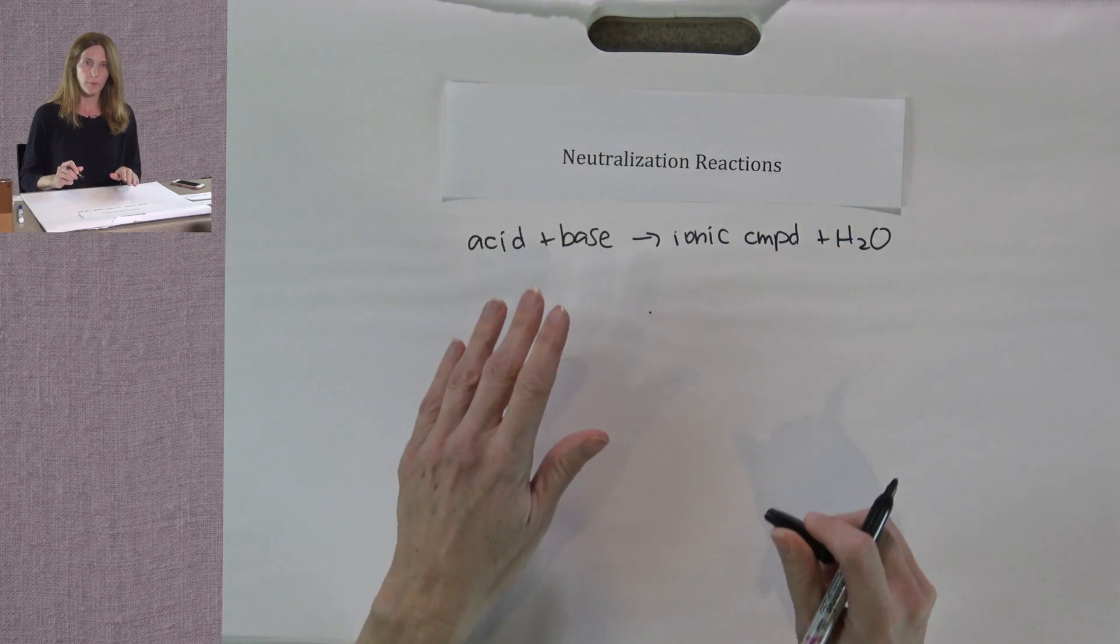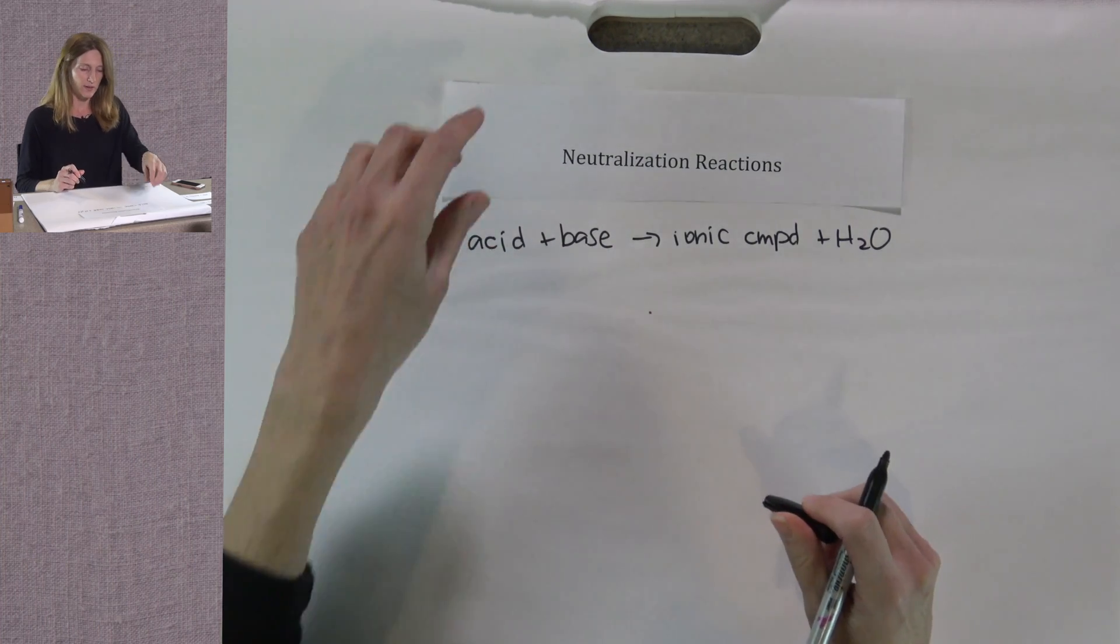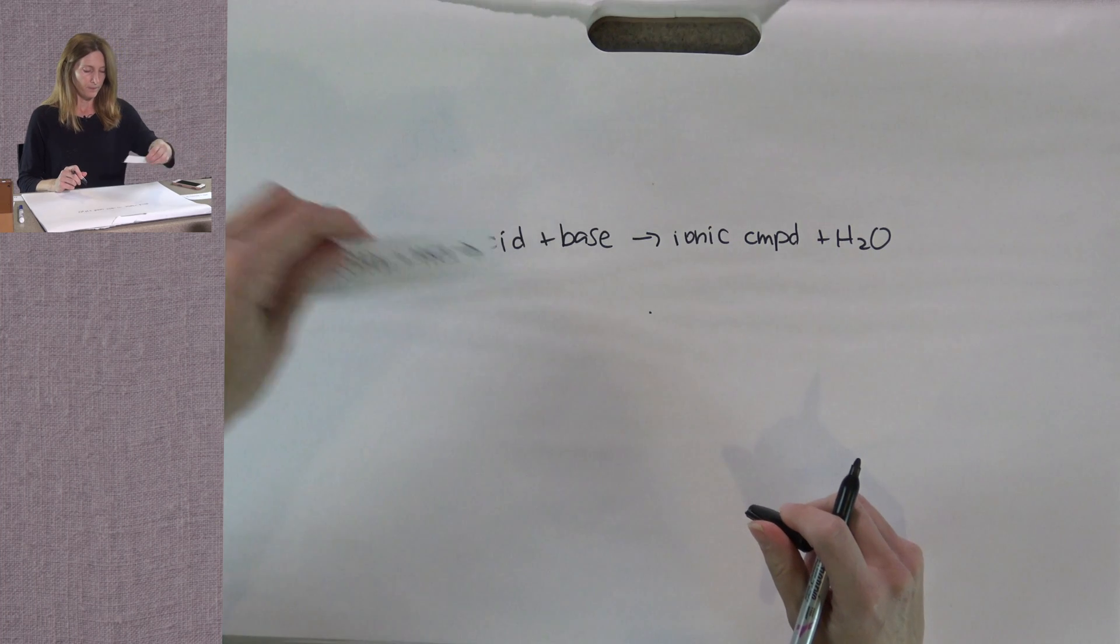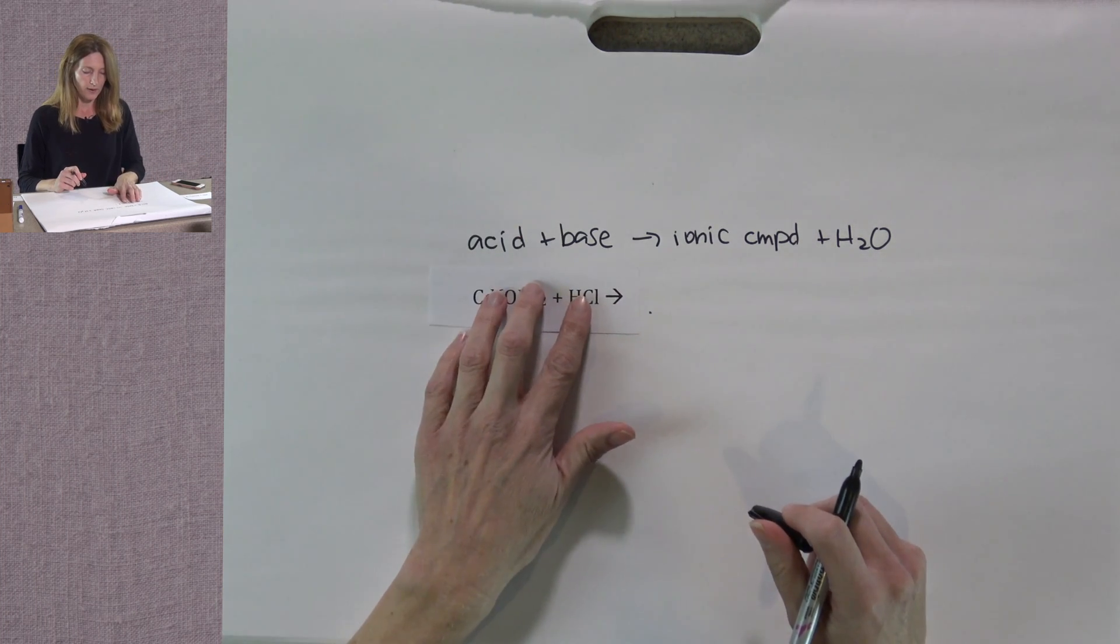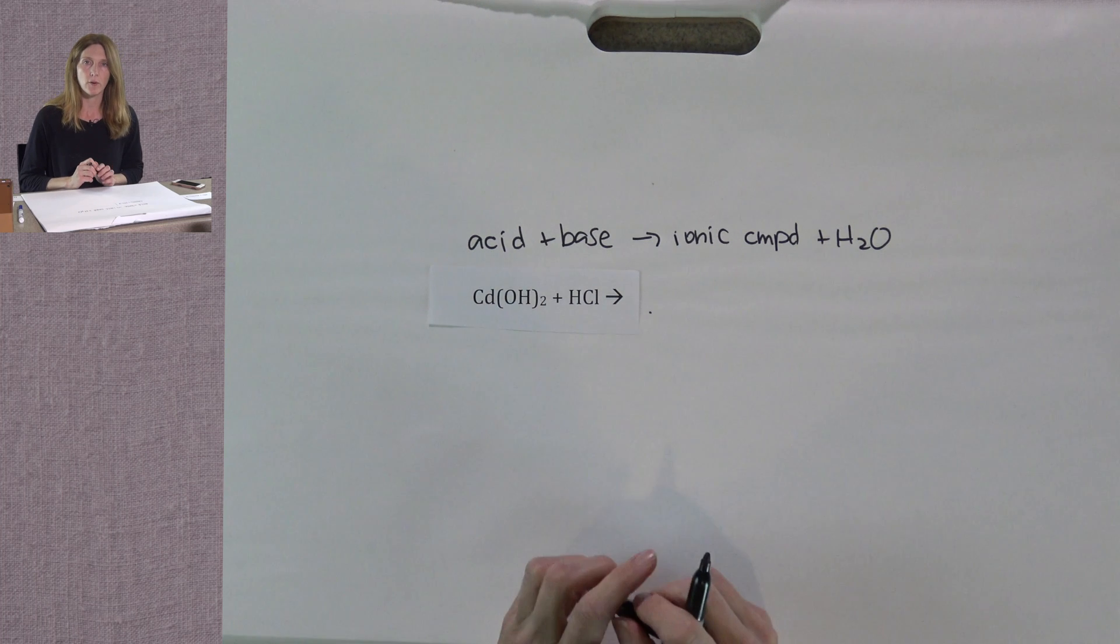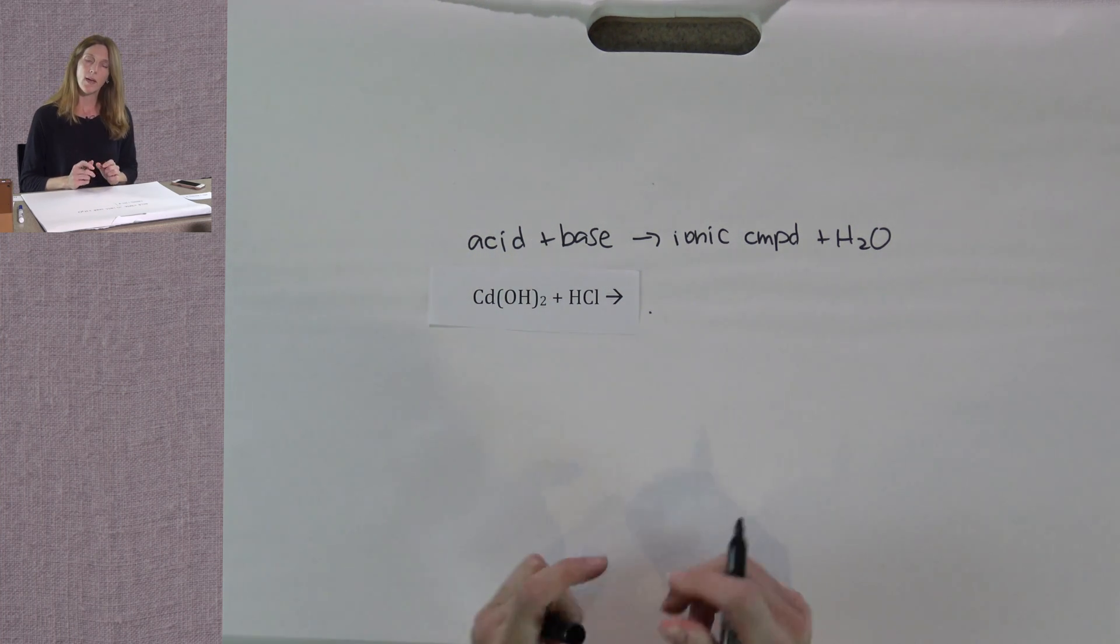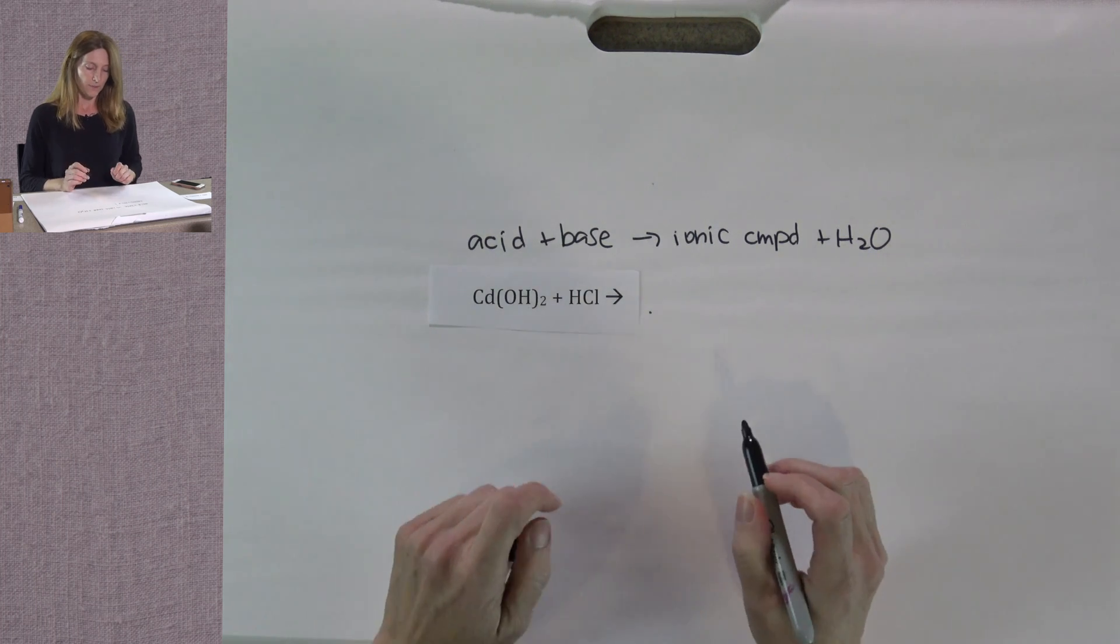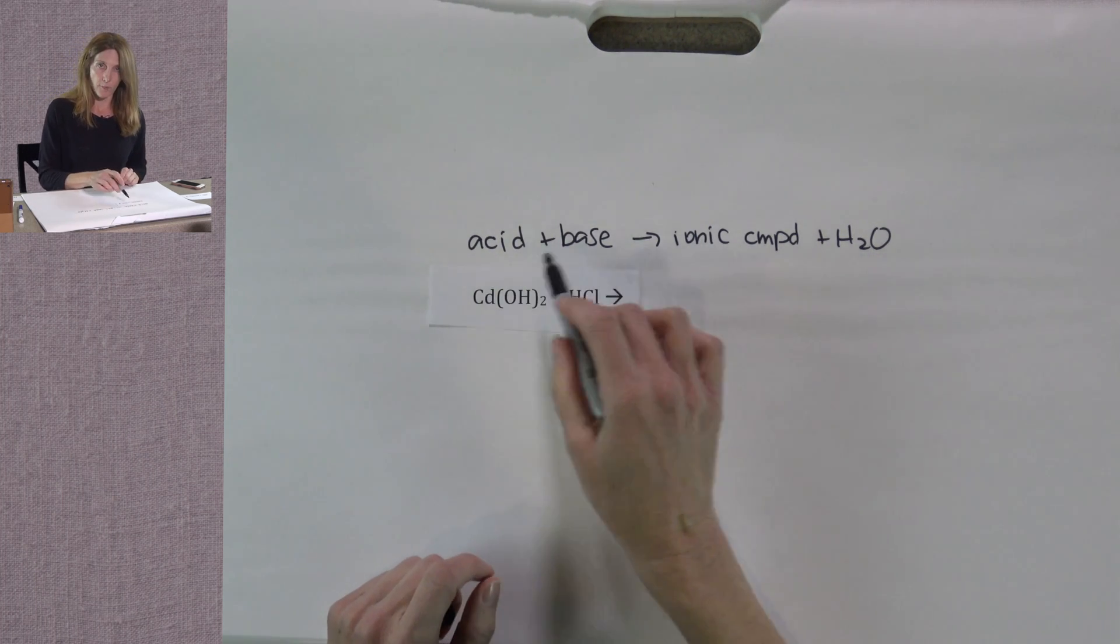So now that we've reviewed a bit about what a neutralization reaction is, let's look at an example. Our first example is cadmium hydroxide plus hydrochloric acid. We want to write the products of this reaction. We can look at our formula up above.